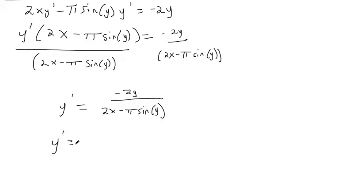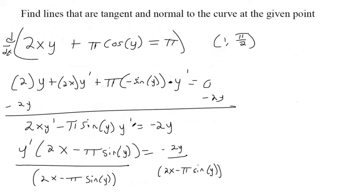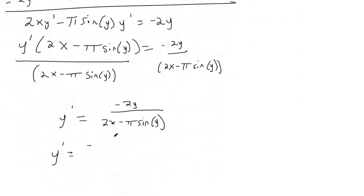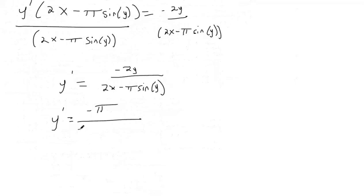So the derivative is equal to - that's negative 2 times pi over 2, so that's just going to be negative pi in the numerator. In the denominator, that's 2 times 1 because we're plugging in 1 for x. And this is pi times sine of pi over 2.